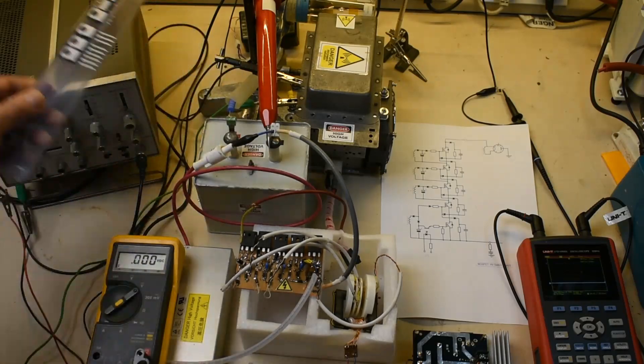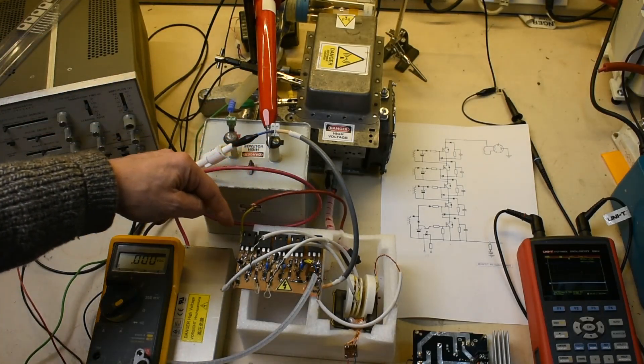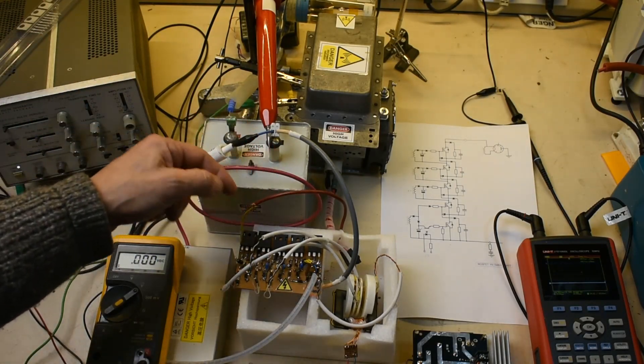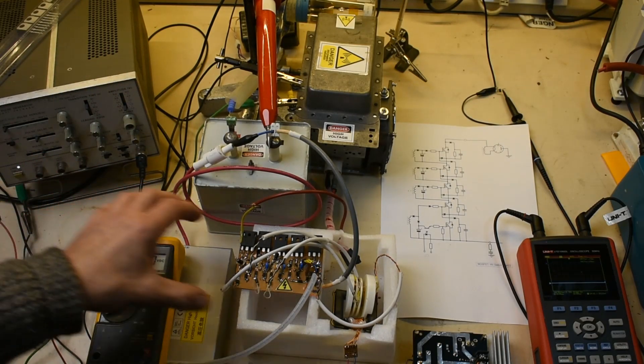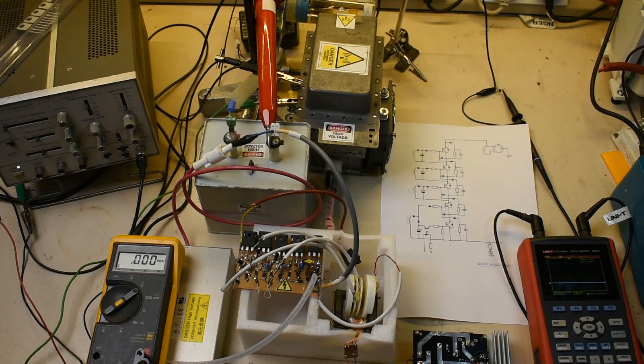So rather than scrap the whole idea, I've put new devices in here. Certainly going through a lot of these, but we've got a new set. The problem is that when one goes, they all go. It's a cascade problem, but replaced and ready to go. This time I've measured the resistance. It's 11 ohms. Not too bad.